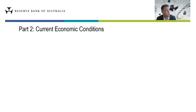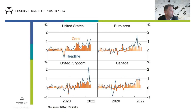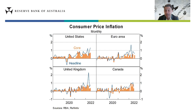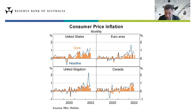Now let's talk about current economic conditions, starting with the global economy. Inflation has been at multi-decade highs in most economies over recent months, well above many central banks' inflation targets. It has been broad-based across a wide range of goods and services and more persistent than most economists expected. Headline inflation on a monthly basis has been consistently higher than core inflation recently, as food and energy prices have risen reflecting major disruptions to global supply due to Russia's invasion of Ukraine.